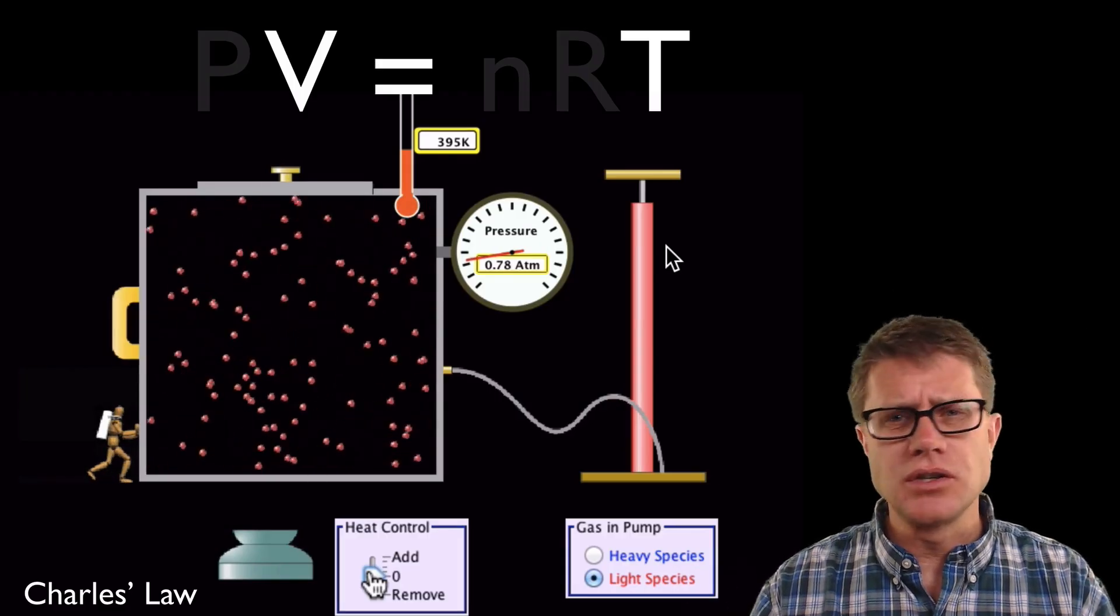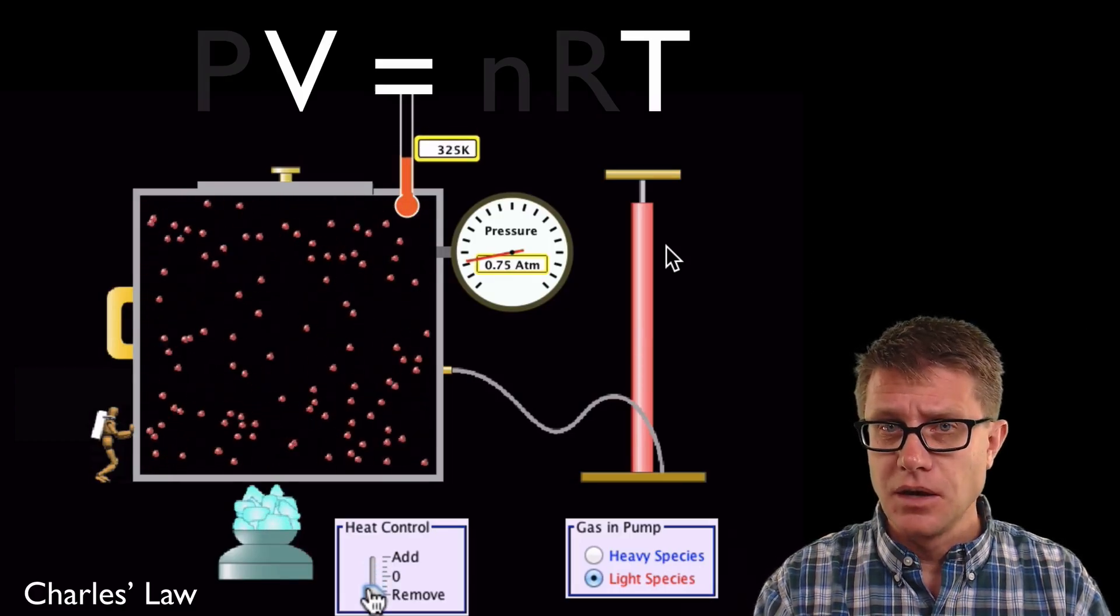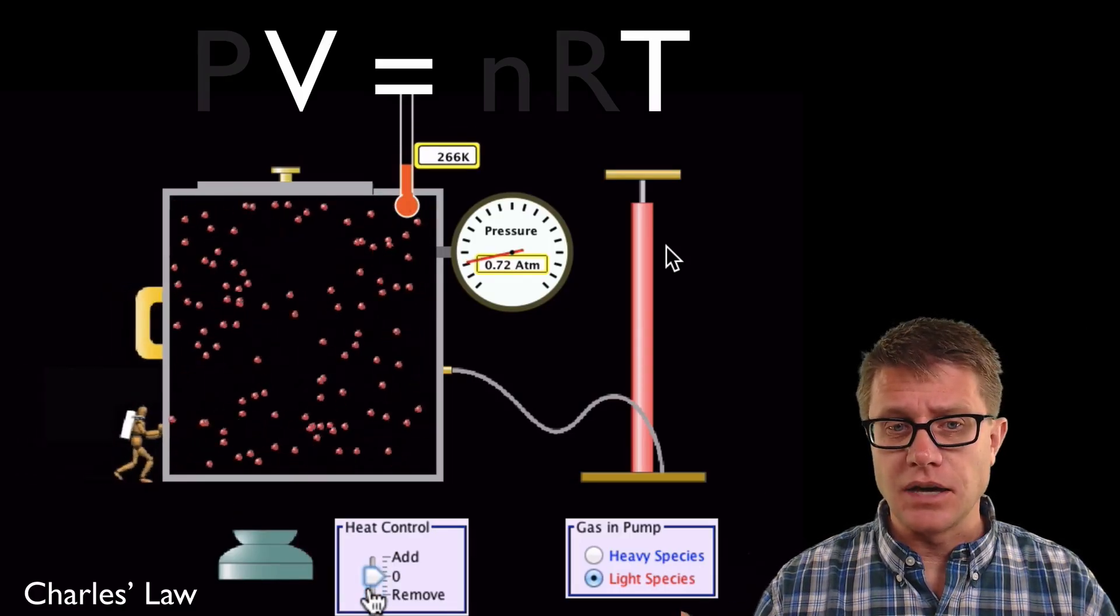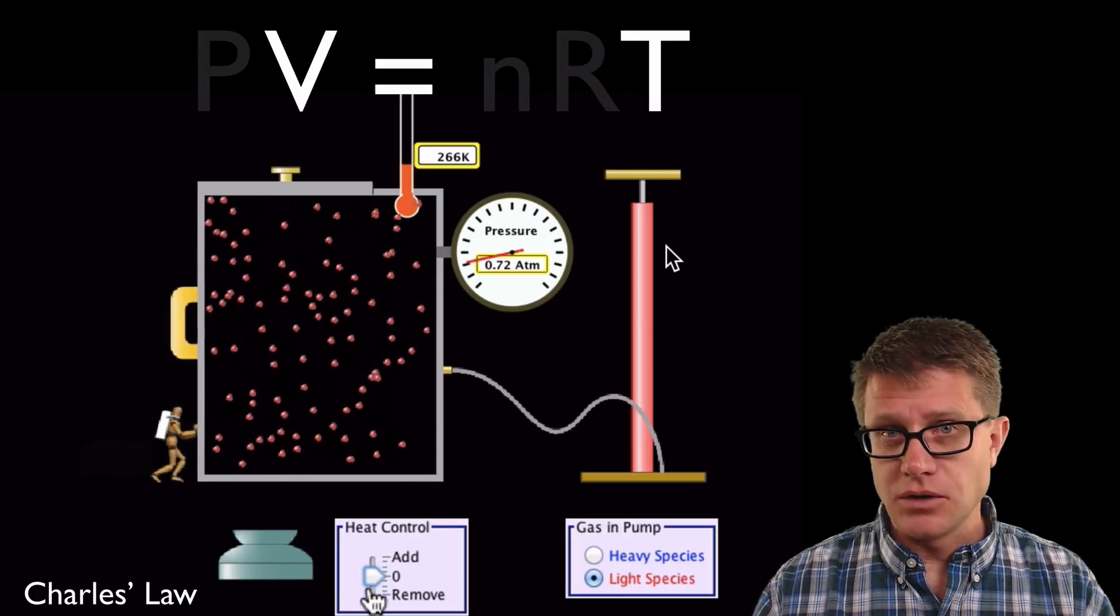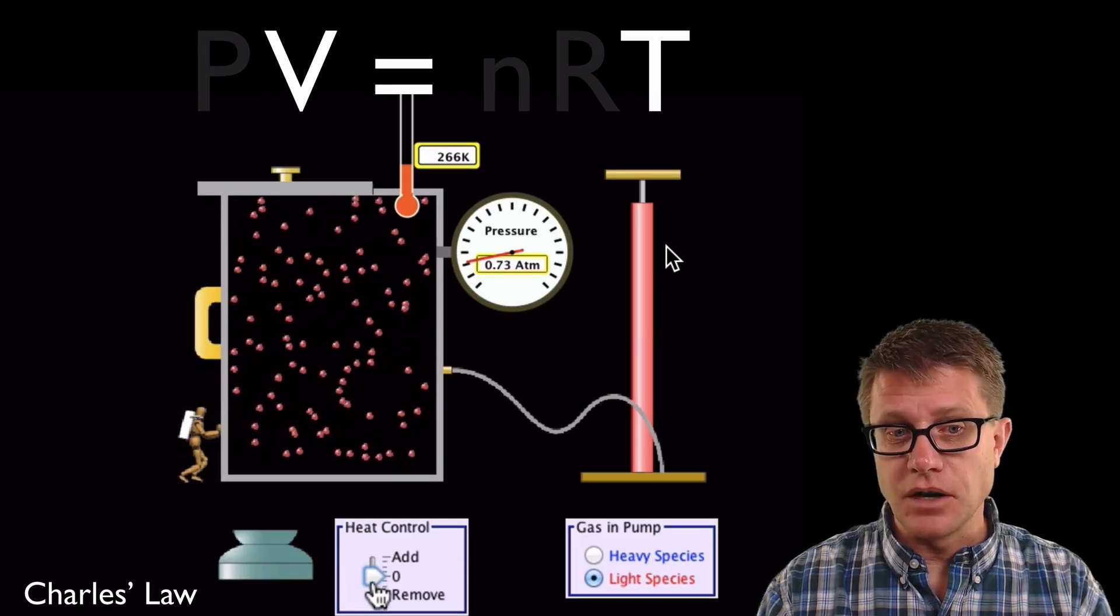And so why is that? Increasing the temperature increases the average kinetic energy of the molecules. They are moving around faster. If we keep the pressure the same, so that change in momentum as they collide with the container, as we increase temperature, volume goes up. As we decrease temperature, watch what is happening. The volume is going down.